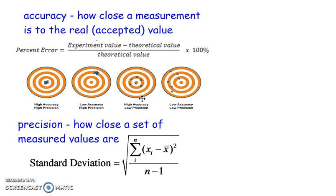The third one, the values are not precise because they're not close together. However, they're relatively accurate, especially if you were to average all of these data. The average is definitely an accurate value.